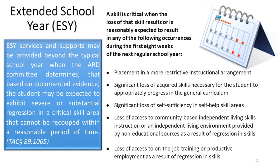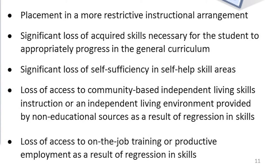Extended-year services and supports may be provided beyond the typical school year when the ARD Committee determines that, based on documented evidence, the student may be expected to exhibit severe or substantial regression in a critical skill area that cannot be recouped within a reasonable period of time. A skill is critical when the loss of that skill is reasonably expected to result in any of the following during the first eight weeks of the next school year: placement in a more restrictive instructional arrangement; significant loss of an acquired skill necessary for the student to progress in the general curriculum or on the IEP; significant loss of self-sufficiency in self-help areas; loss of access to community-based independent living skills or an independent living environment provided by non-educational sources; or loss of access to on-the-job training or productive employment.